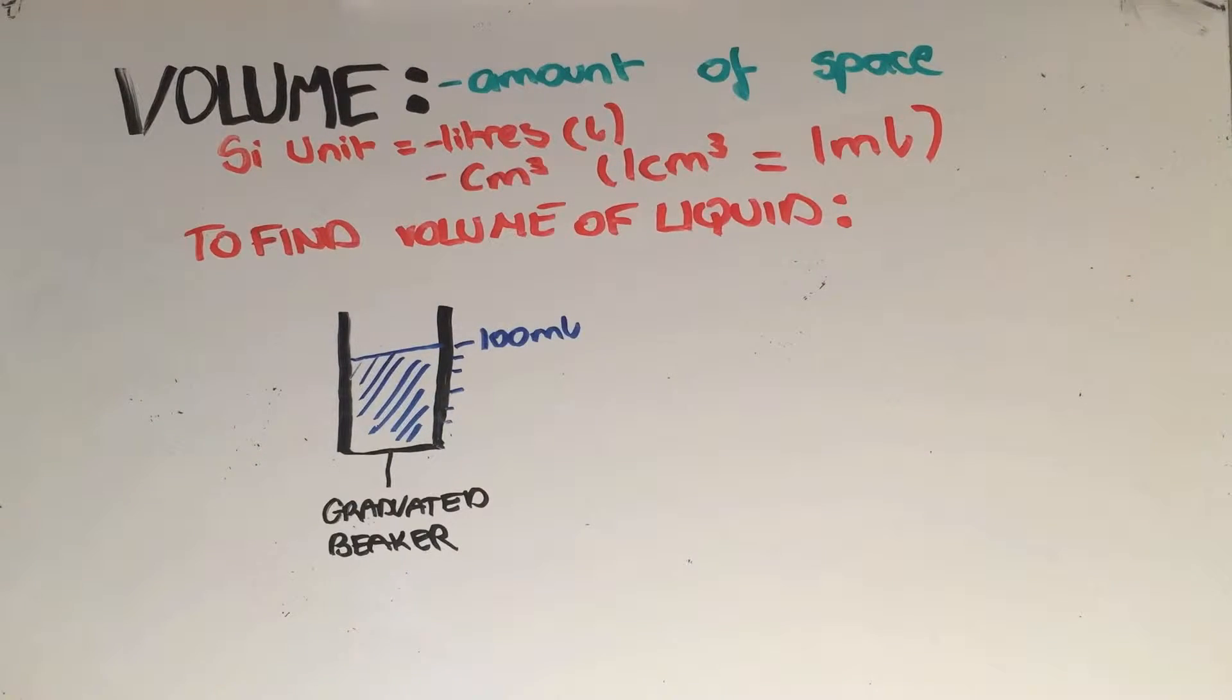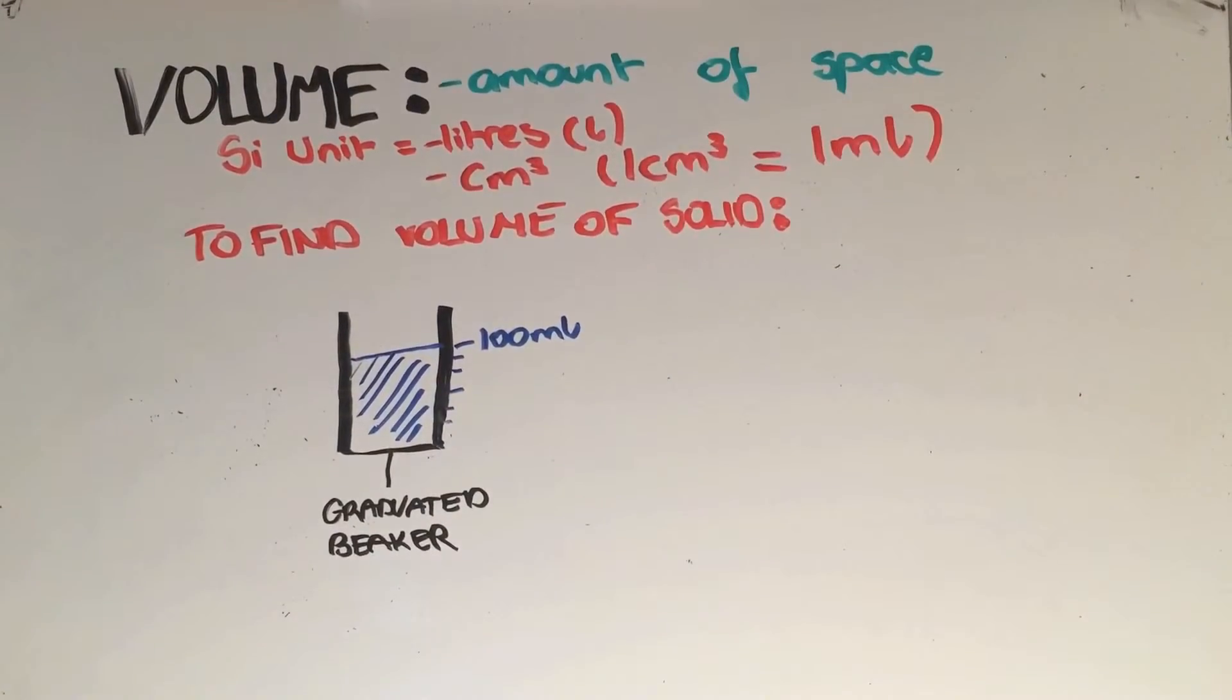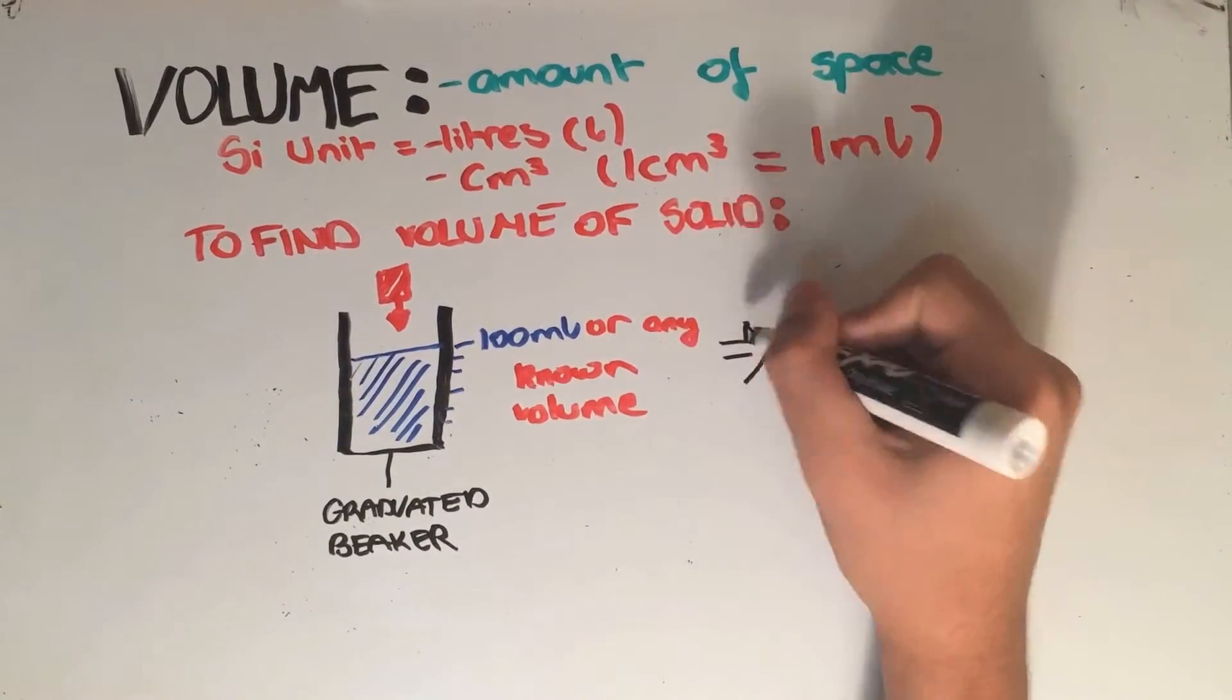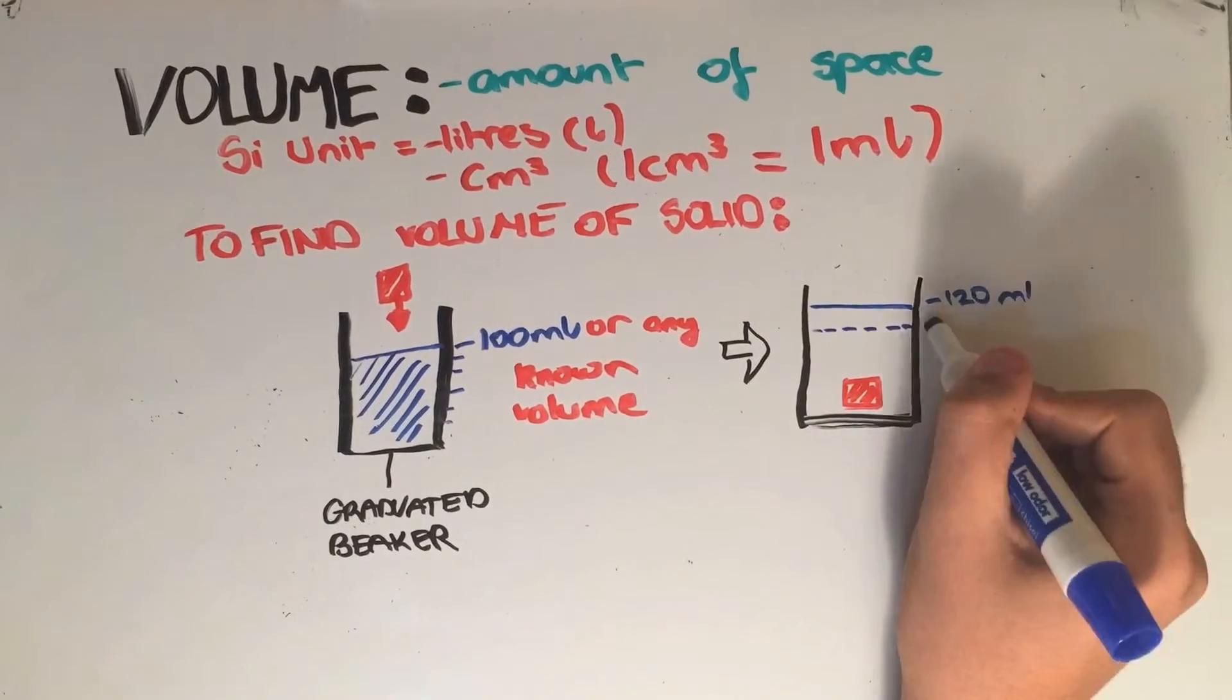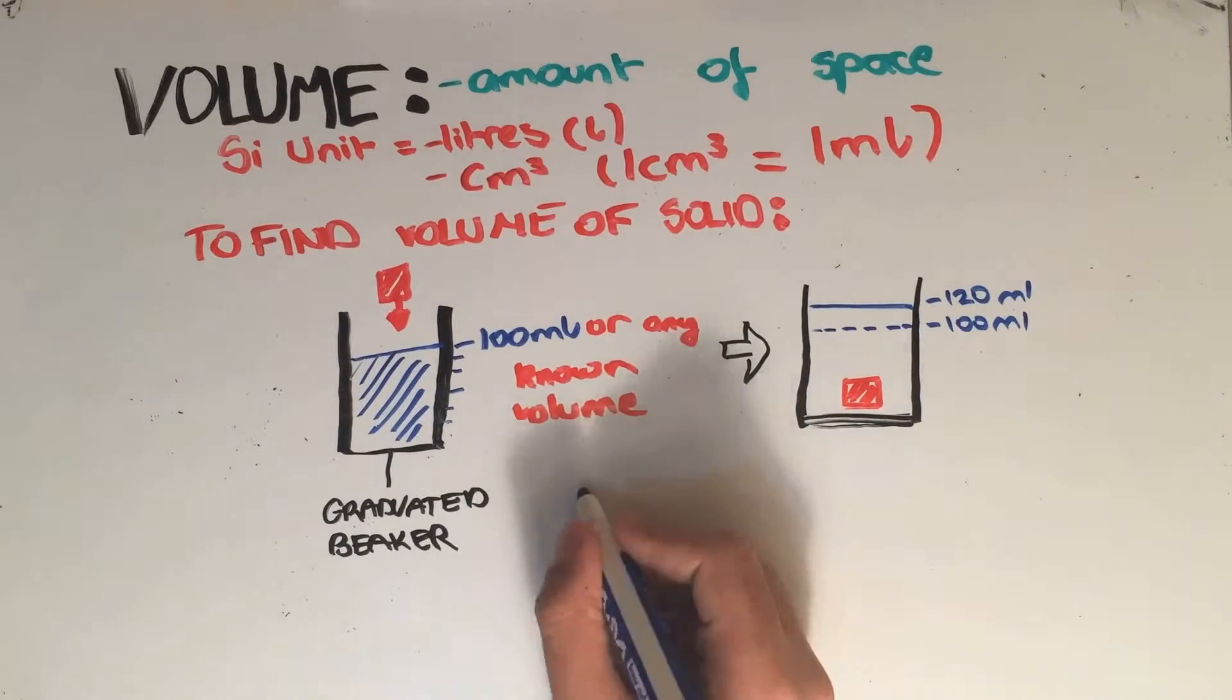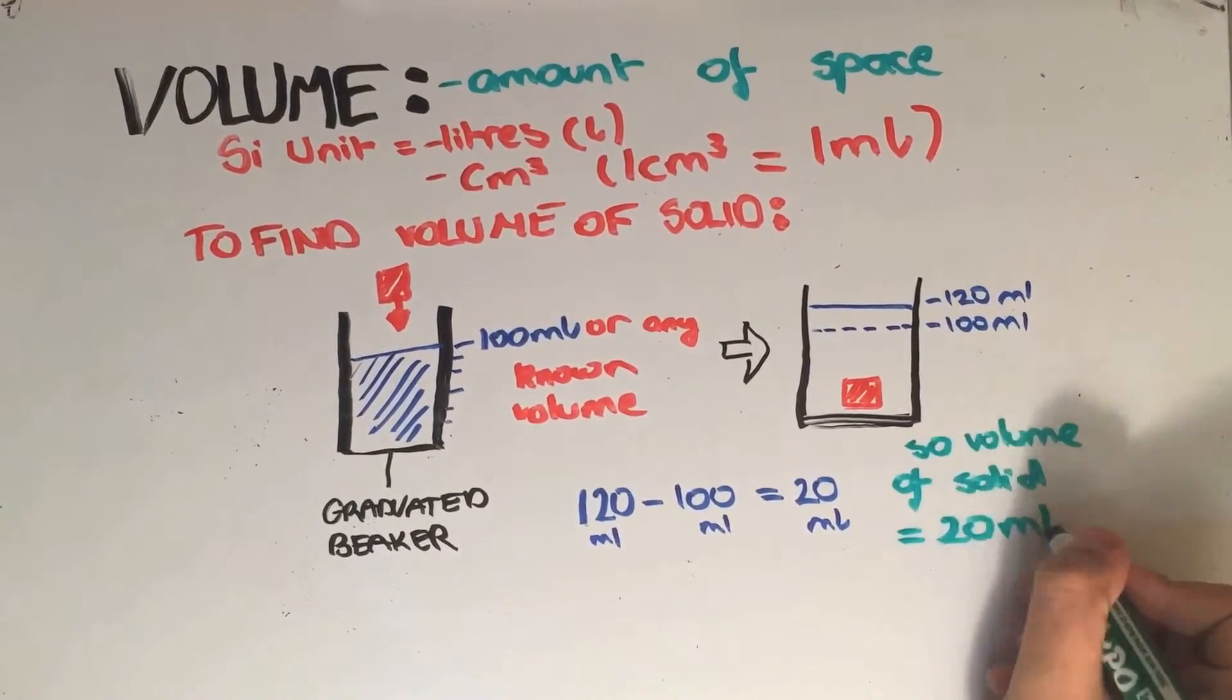To find out the volume of a solid, put the solid into 100 milliliters of a liquid or any other known volume. The change in the reading is equal to the volume of the solid. So for example if you put the solid shown into 100 milliliters of liquid, the reading on the beaker becomes 120. So 120 minus 100 is the volume of the solid. The solid is 20 milliliters or 20 centimeters cubed.